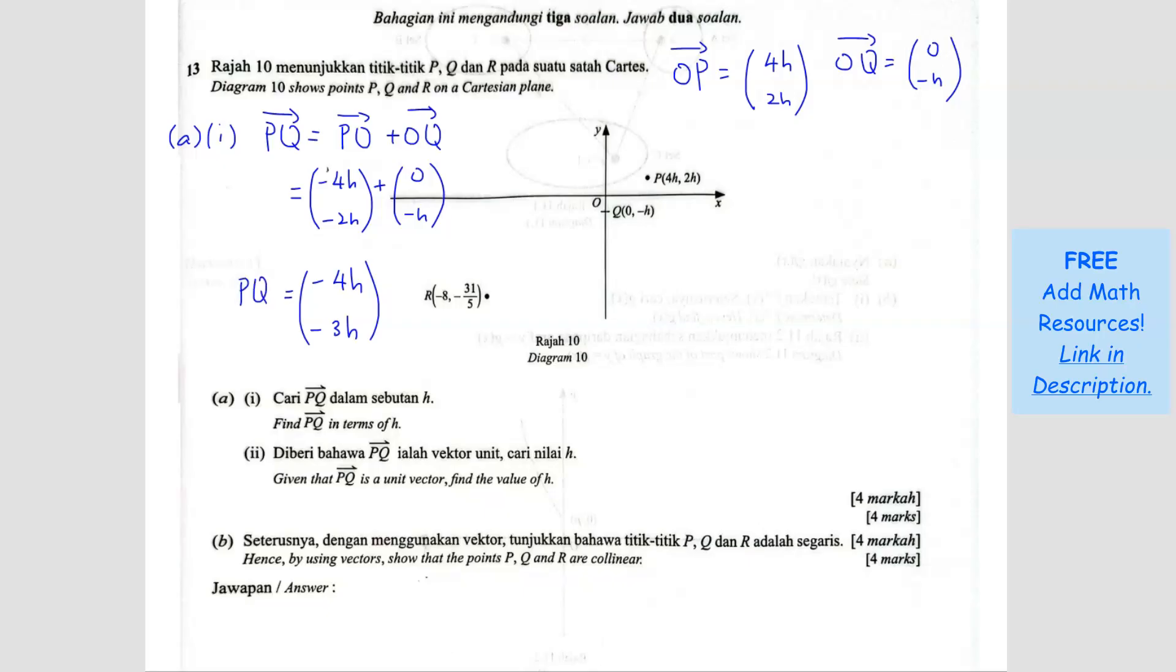So this is PQ. If you want to write in terms of I, J you can. So negative 4H I minus 3H J. Alright, question A2.